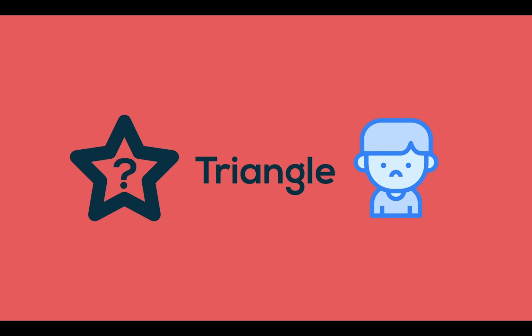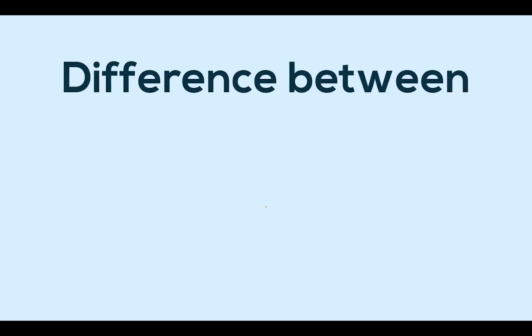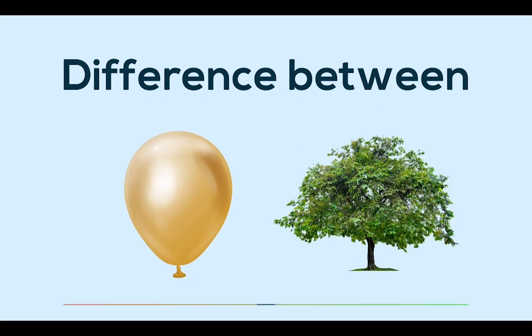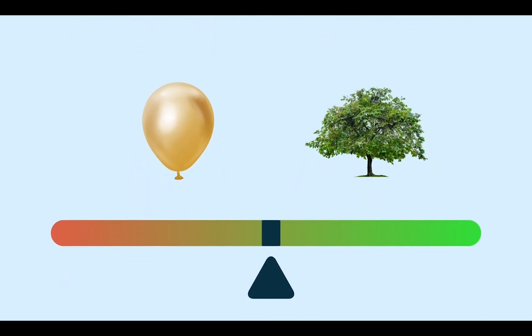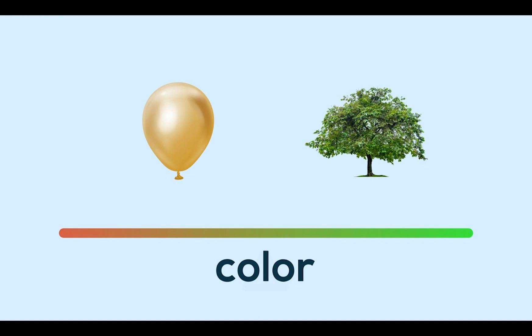But how does the brain or computer even make a guess on what something is? Well, we can think of it like this. Let's say you're trying to tell the difference between a gold party balloon and a tree. So a kid or a computer can think, how green is it to differentiate it? As we can see here, this is a one-dimensional space because there's only one axis, but we can tell the difference between the gold party balloon and the tree.